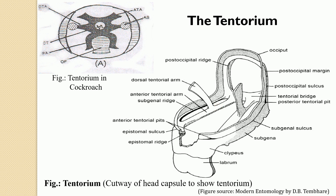In apterygote insects there is no homologous structure, so the tentorium appears to be an important evolutionary advancement in pterygoate insects. This endoskeleton of the head is present only in pterygoate insects and is a characteristic feature of pterygoates, being completely absent among the apterygota. It appears to be formed from tergal and sternal elements — the anterior arms develop as a sternal apophysis and the posterior arm as a tergal apophysis.